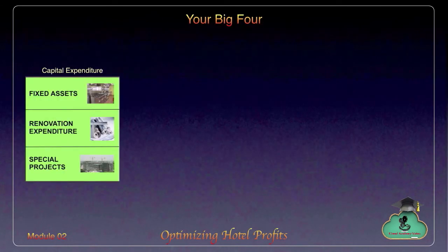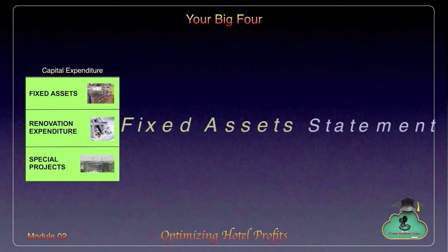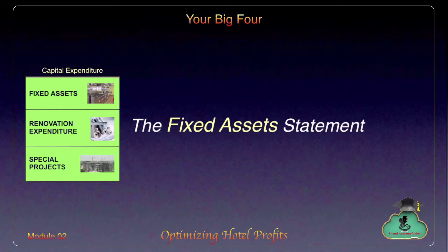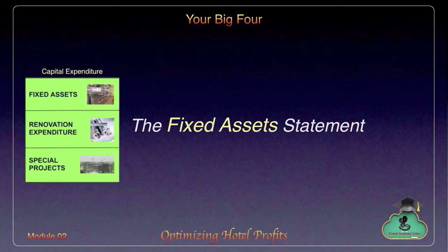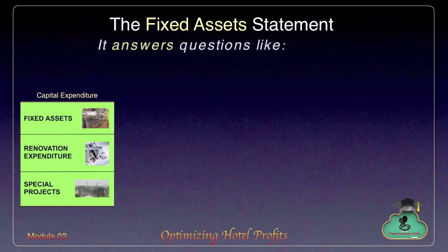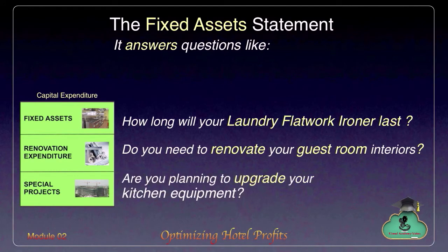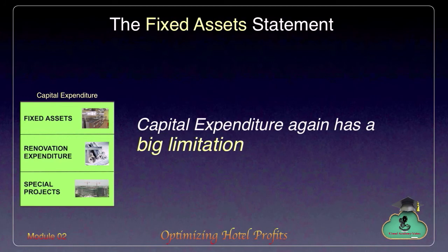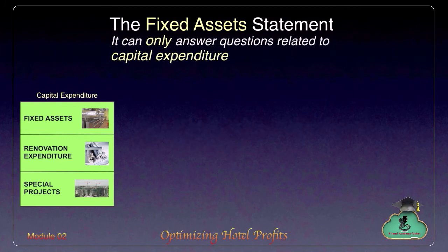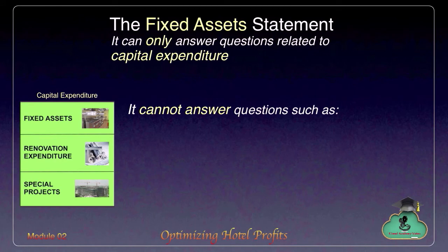While the profit and loss statement is called the performance statement, the balance sheet the financial position statement, and the cash flow the cash movement statement, the capital expenditure statement is called the fixed assets statement. It mainly works with fixed assets. The fixed assets statement answers questions relating to fixed assets — such as the life of your laundry equipment or whether there is a need to renovate your guest room interiors. However, it too has a shortcoming: it can only give information related to fixed assets. For example, it cannot tell you what your food and beverage inventory was or how much you owed your equipment suppliers.